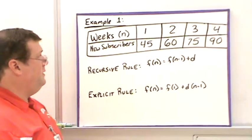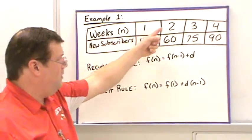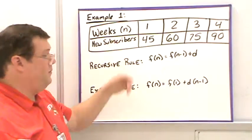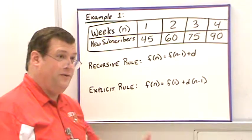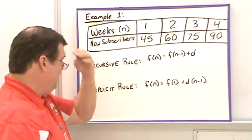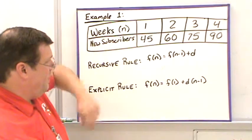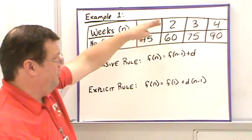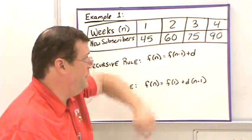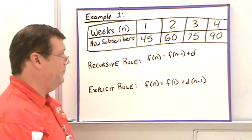For example, here we have a table with weeks 1, 2, 3, 4 and the new subscribers to my YouTube channel. Week 1 had 45, week 2 had 60, week 3 had 75, and week 4 had 90.